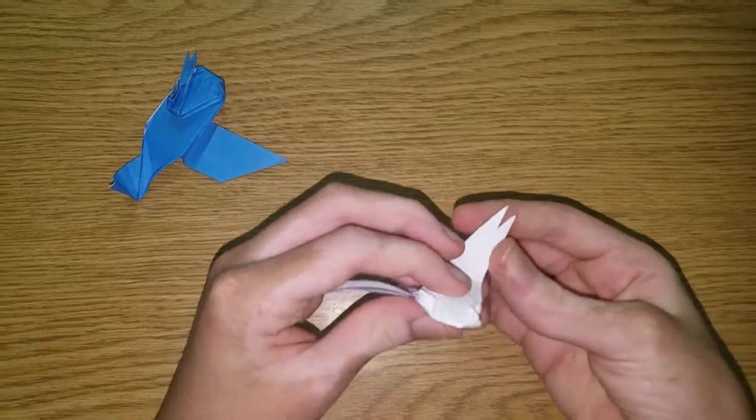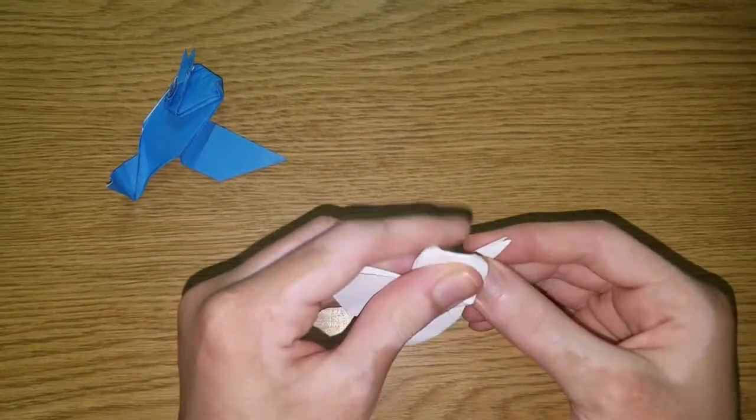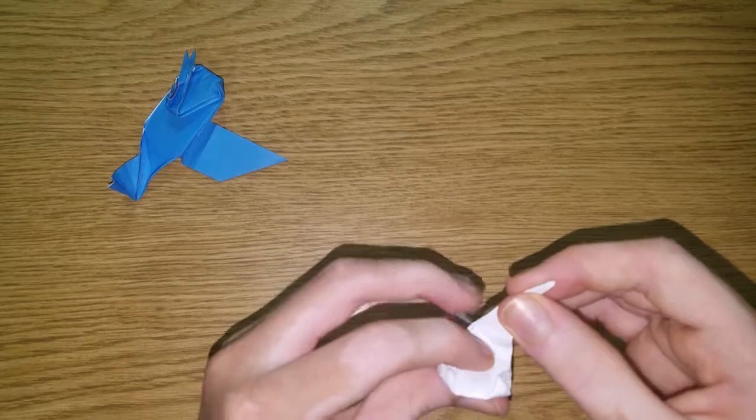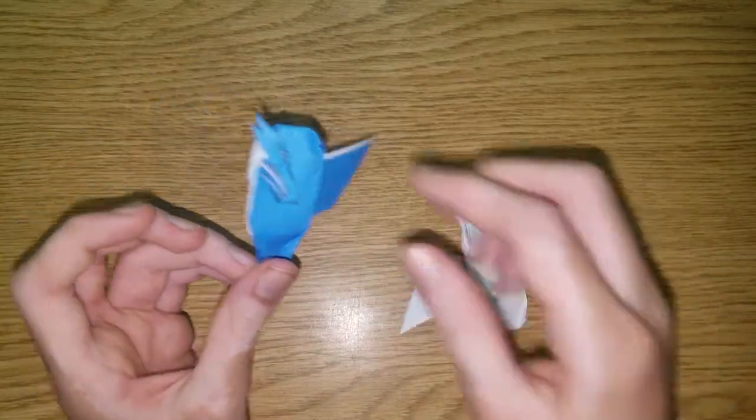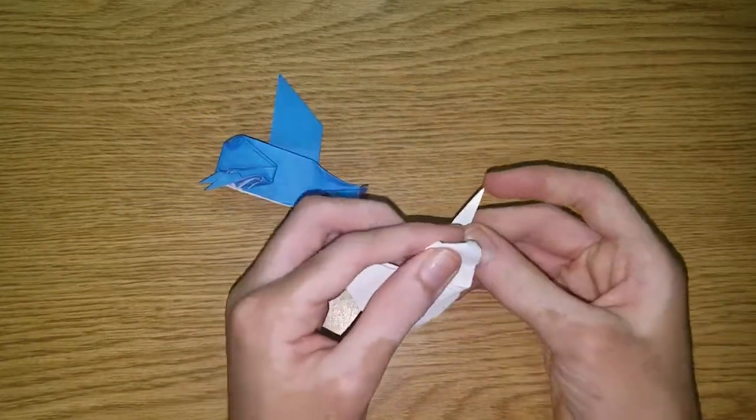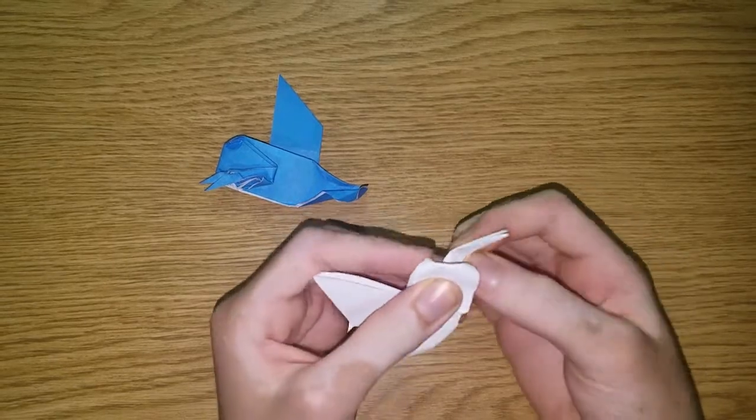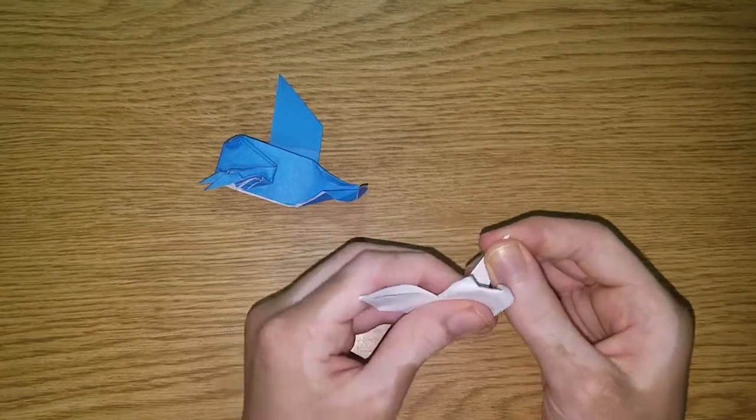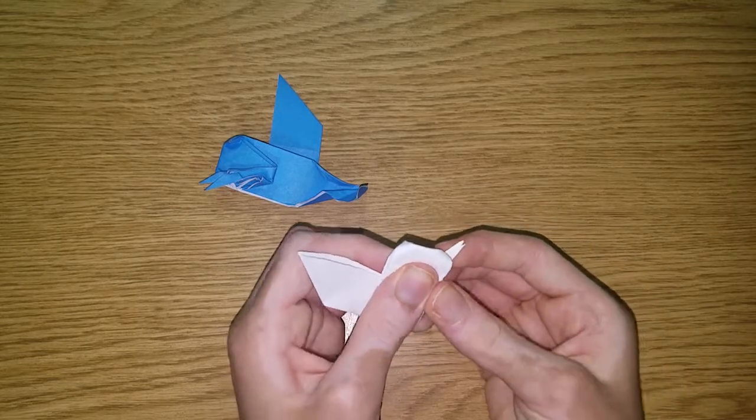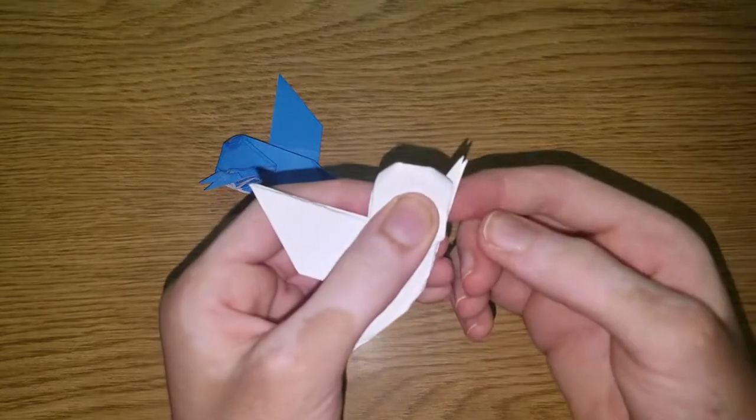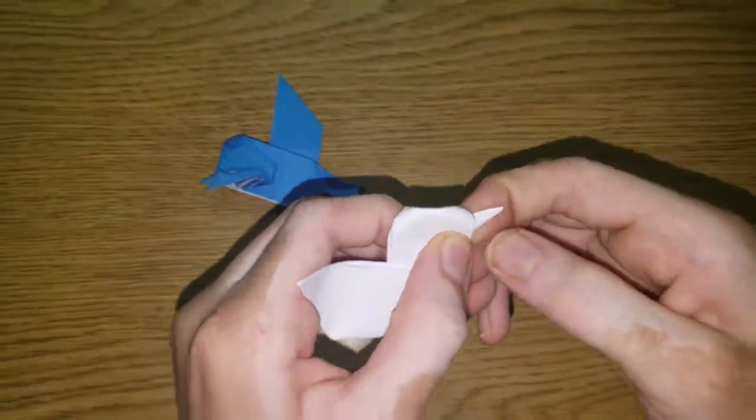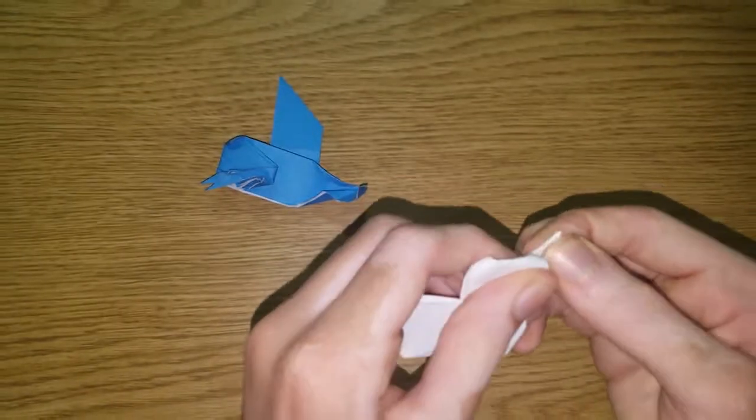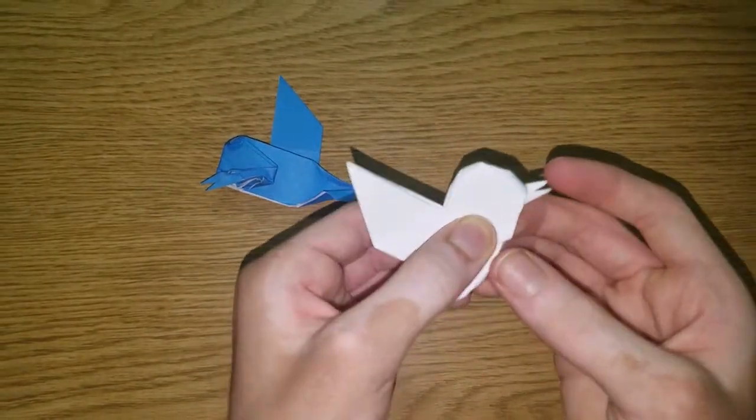We're almost done. Now, we're going to spread those layers to make the beak. So fold this up. Maybe like this. So you're going to fold this up and just maybe try to shift it around until it looks good. And then that you can maybe fold a little bit like this. And that looks pretty good.